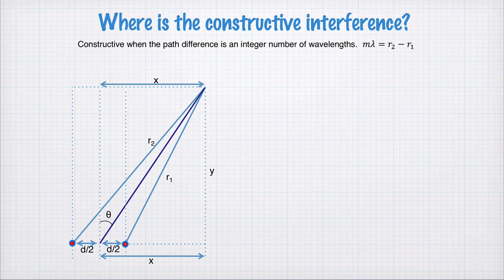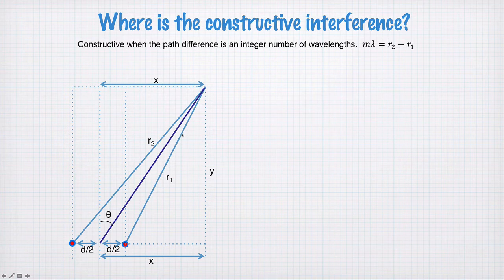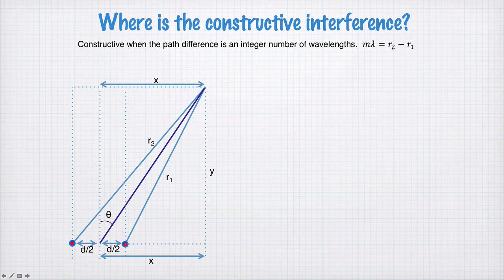Let's do a calculation for constructive interference. If we have constructive interference, it means that the path from this point source to some point in space, and the path from this other point source to the same point in space, must be equal in length so the waves arrive in phase — or if they differ in length, they must differ by an integer number of wavelengths so the waves add up constructively. So we require that the difference in distances r2 minus r1 must equal an integer number of wavelengths: mλ, where m is an integer and λ is the wavelength. That's the condition for constructive interference.